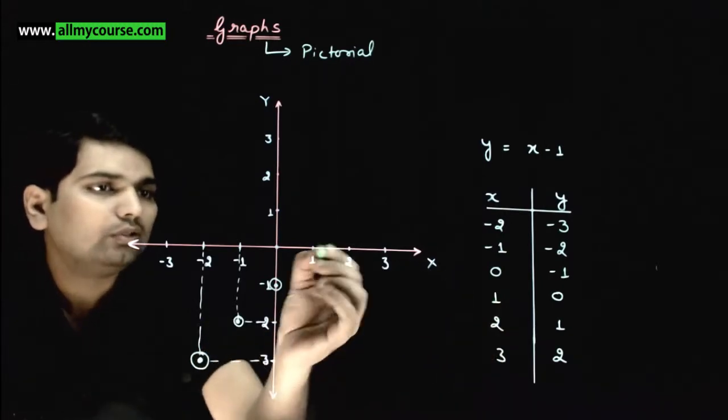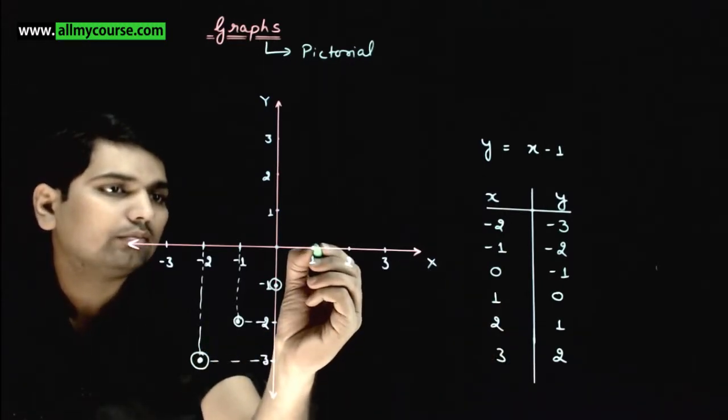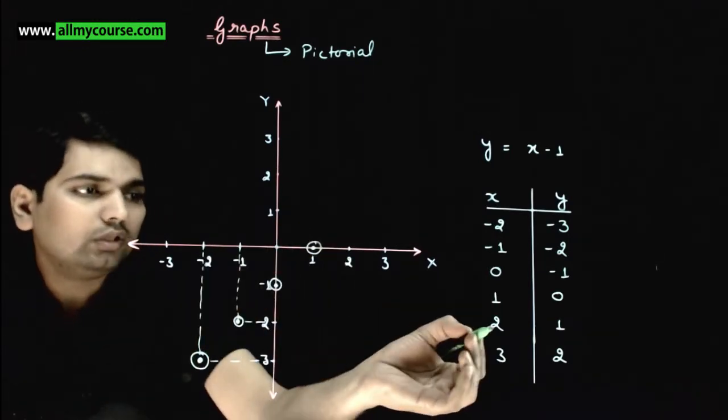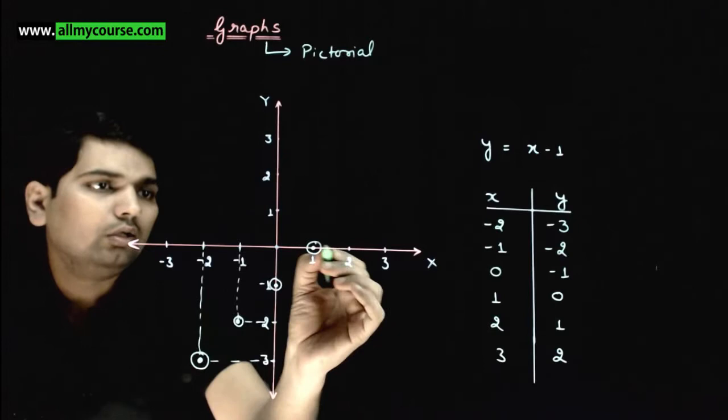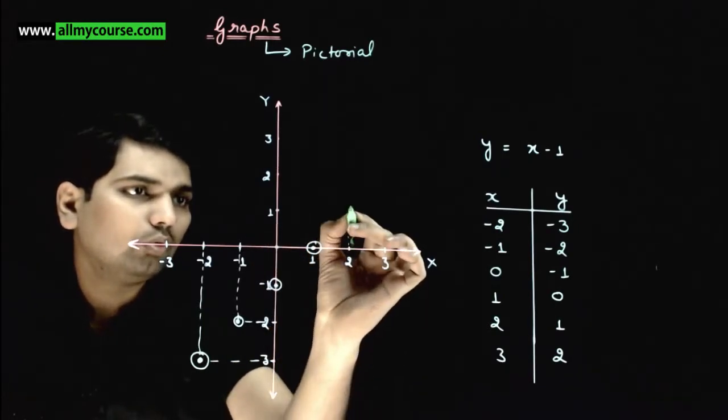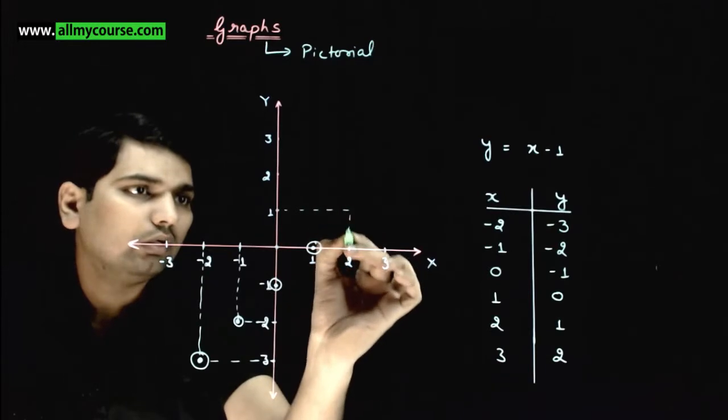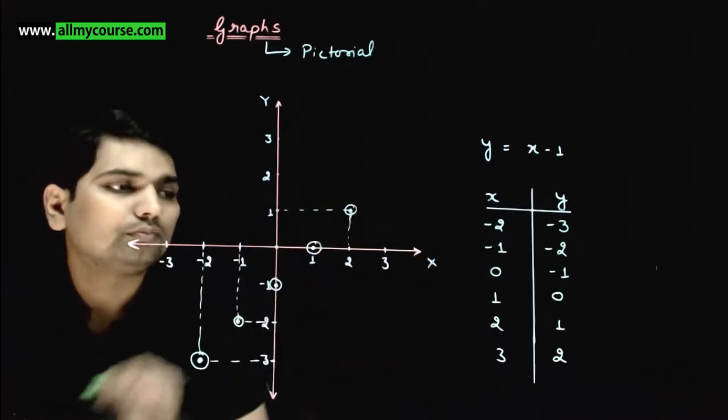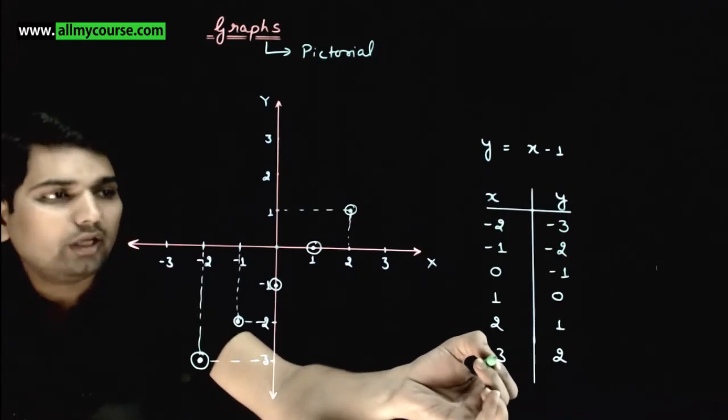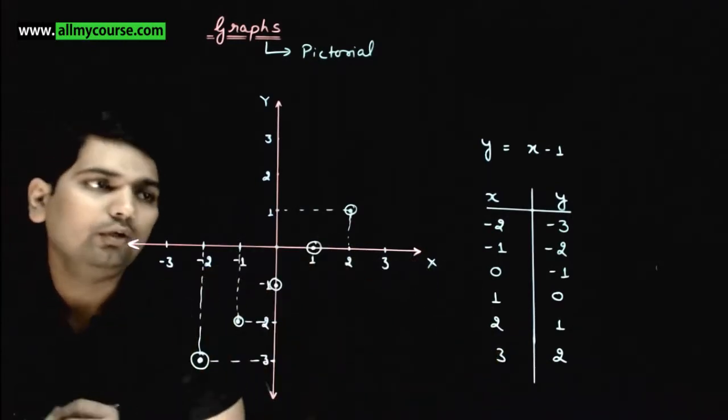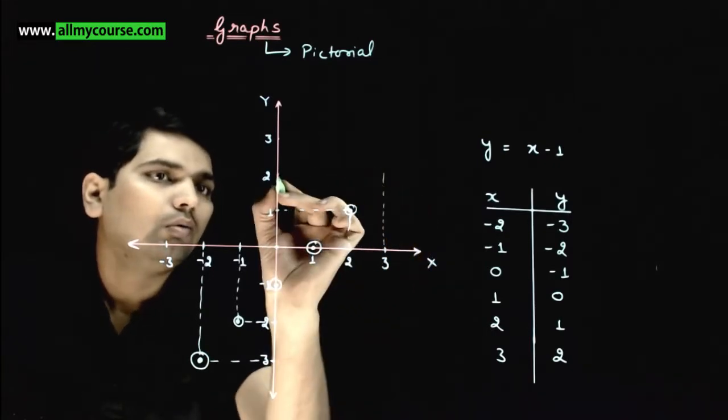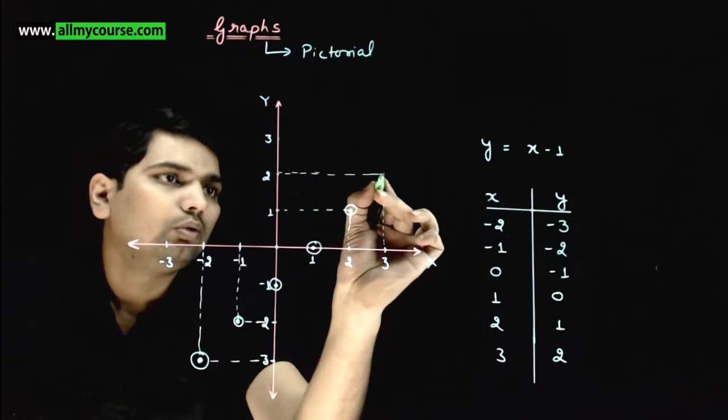Fourth point is 1 comma 0, that is this point here. X value 1, y value 0. Fifth is 2 comma 1. Two, and y is equal to 1. X is equal to 2, y is equal to 1. This is the point. And the last point we're going to plot is x equals 3, y value is 2. X is equal to 3, y equals to 2.